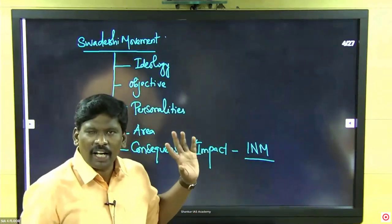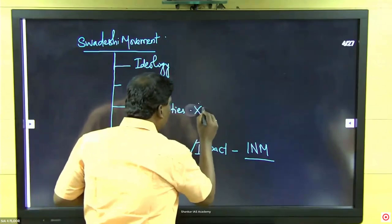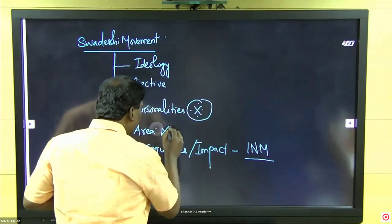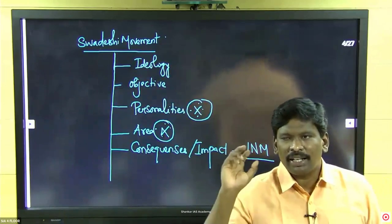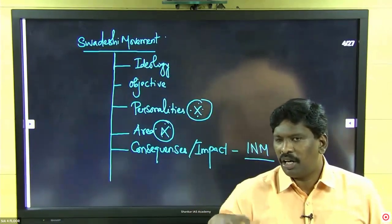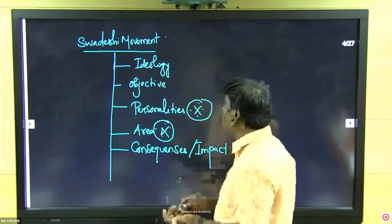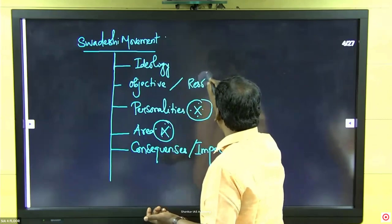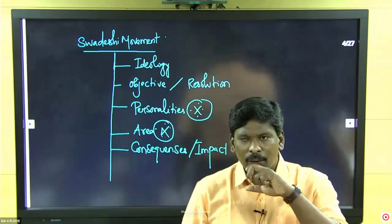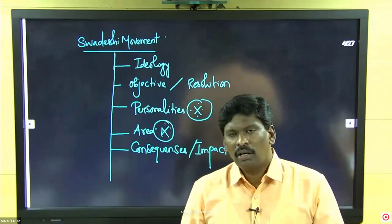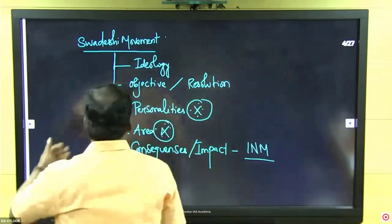They try to trick you with statements about the area — for example, saying the Swadeshi movement spread in the northern part of India versus the eastern part of India. They also ask about the objective and resolution: who moved the resolution and where. In the last six years, consequences and impact connected to the national movement have become an emerging area in prelims.